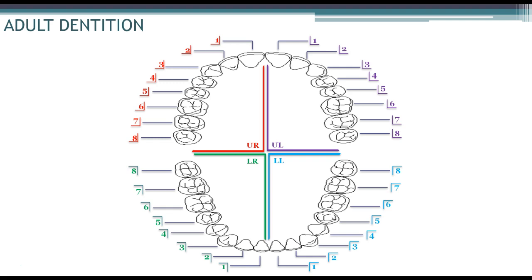And there you have it — that is the Palmer Charting System. It's pretty straightforward once you get acquainted with the shapes involved with the quadrants. The numbers are all the same, and the letters for children are all the same per quadrant; the only thing that changes is the symbol associated with the tooth. If you'd like to learn more about dentistry, check out more of our videos at DentalHub.com. Thanks for watching!